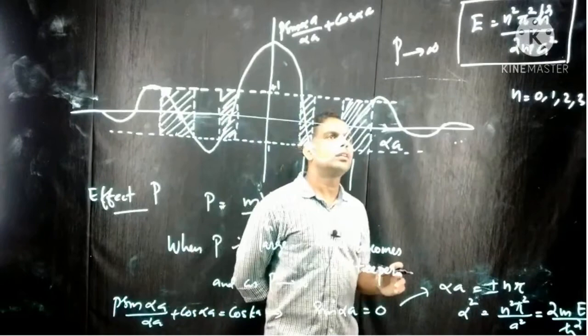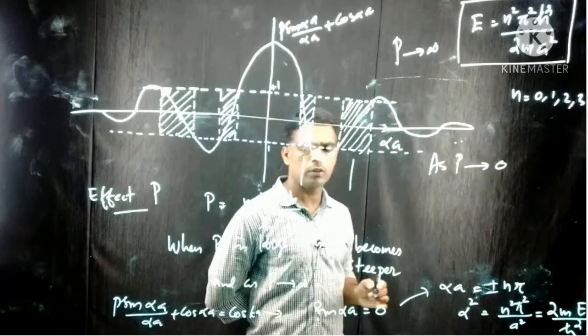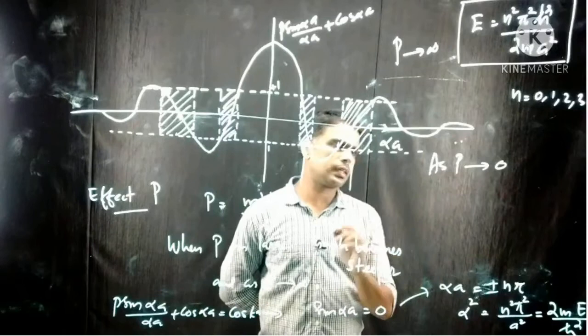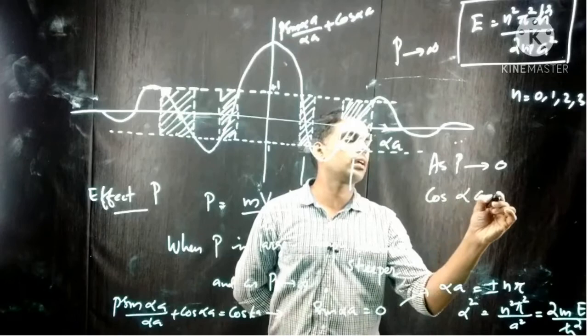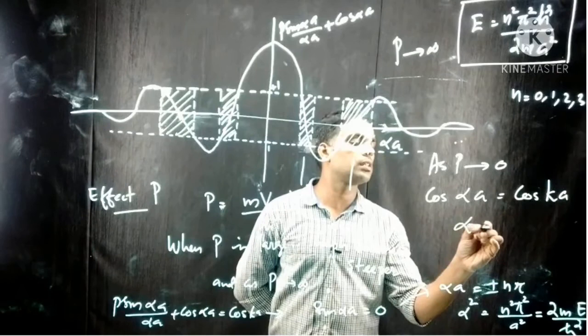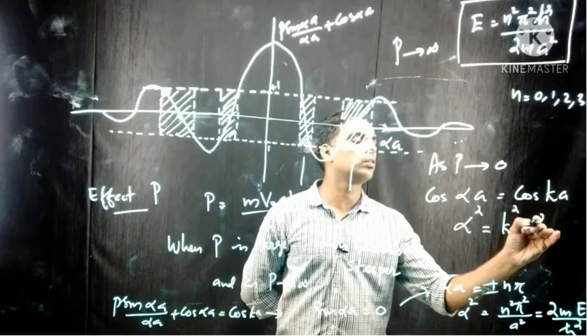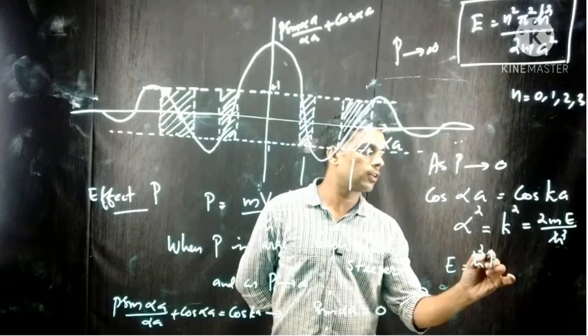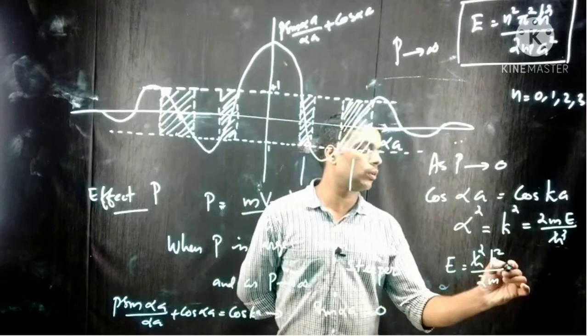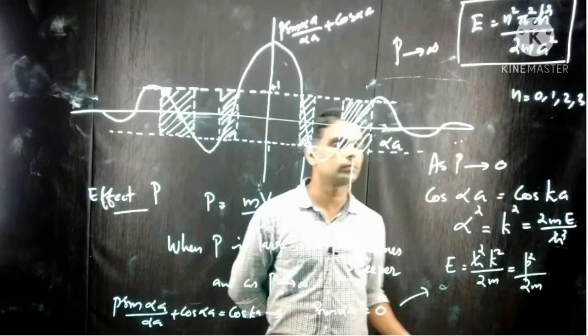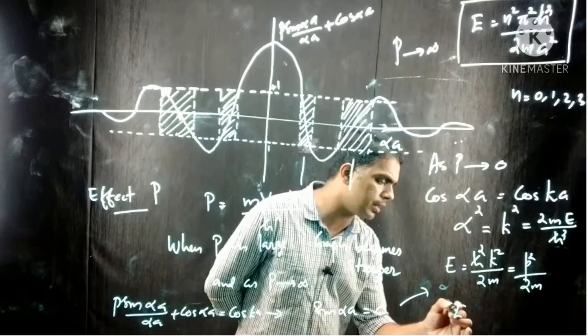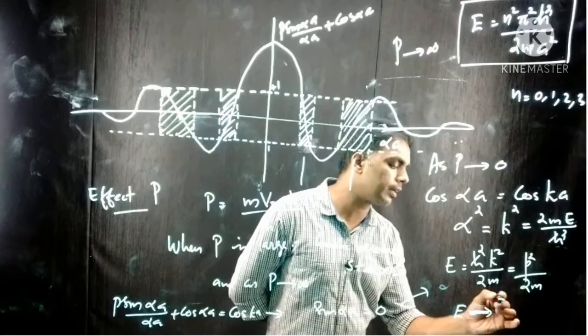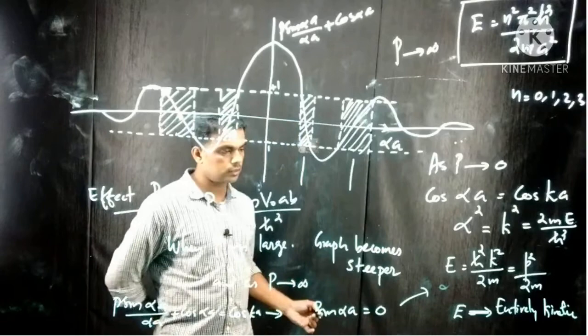The next case is P tends to 0. In equation 12, only the second term exists on the left-hand side, so cos(αa) = cos(ka), meaning α = k, and α² = k² = 2mE/ℏ². Therefore E = ℏ²k²/2m = p²/2m. This energy is entirely kinetic — the electrons are free particles.